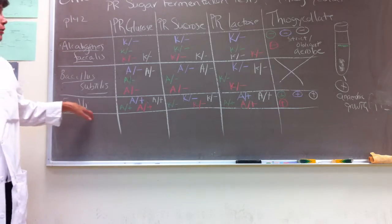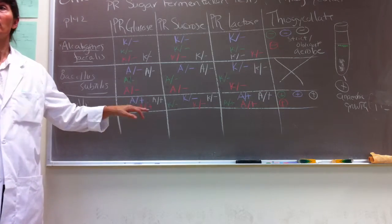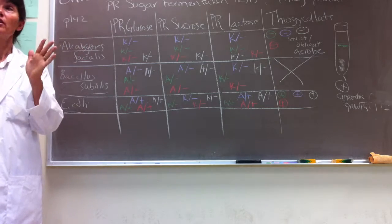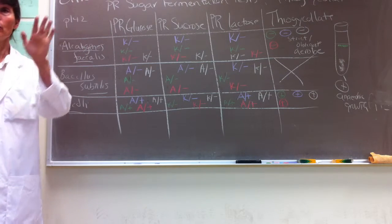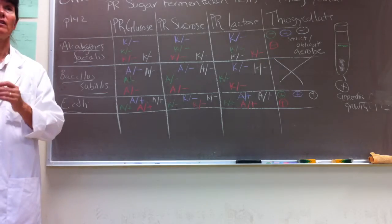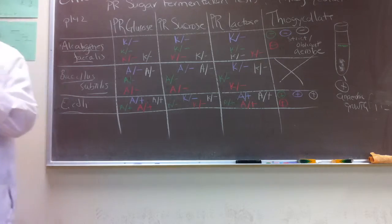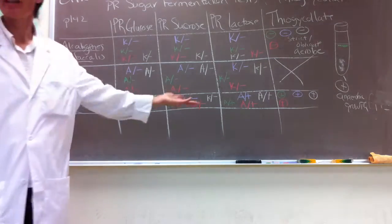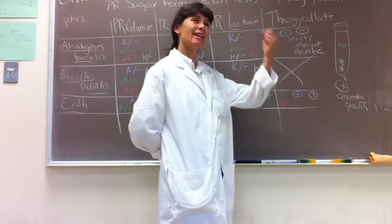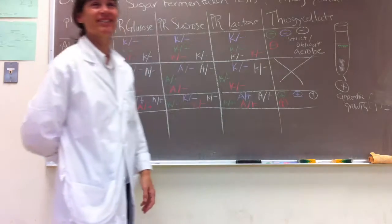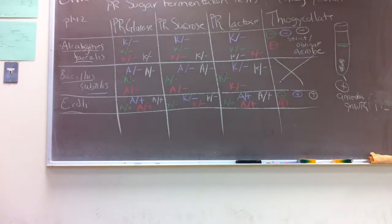Understanding that E. coli can carry out fermentation, what would be your prediction for growth in thioglycolate tubes? Would you predict E. coli growing well in the anaerobic butt? You'd predict it could grow in the anaerobic butt because it carries out fermentation. And what did you guys observe? Yes - beautiful data. You guys are natural-born microbiologists. Really lovely data.